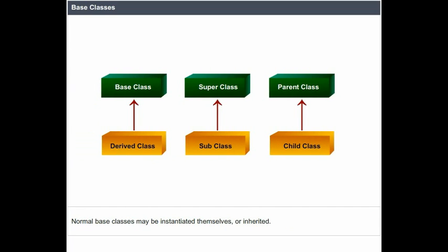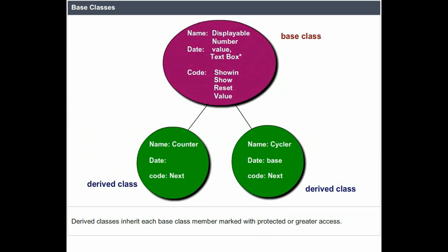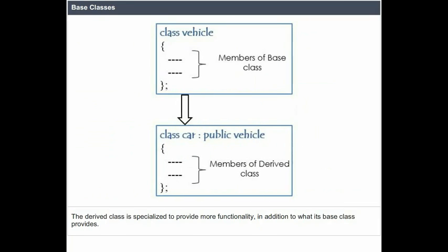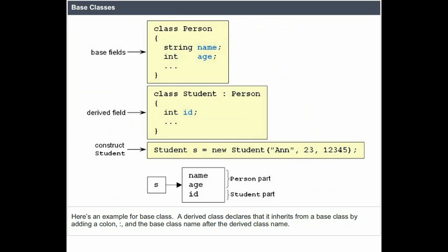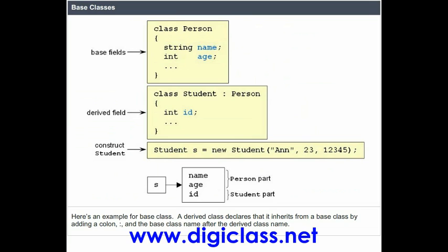Normal base classes may be instantiated themselves or inherited. Derived classes inherit each base class member marked with protected or greater access. The derived class is specialized to provide more functionality in addition to what its base class provides. A derived class declares that it inherits from a base class by adding a colon and the base class name after the derived class name.